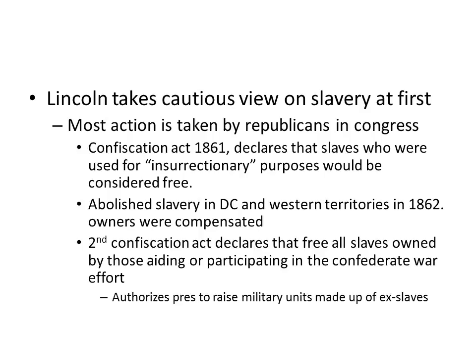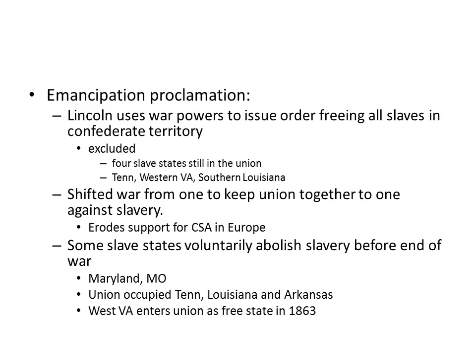While Lincoln is not afraid to dispense with civil rights during the war, he does take a very cautious view on slavery at first, and most actions concerning slavery are taken by Republicans in Congress. The Confiscation Act of 1861 declares slaves who were used for insurrectionary purposes would be considered free. They also go ahead and abolish slavery in Washington, D.C. and the Western Territories in 1862, with the owners being compensated. The Second Confiscation Act declares free all slaves owned by those aiding or participating in the Confederate war effort and authorizes the president to raise military units made up of ex-slaves. It's not until 1863 that Lincoln takes any direct action against slavery himself, because most of what's happening is happening in Congress.